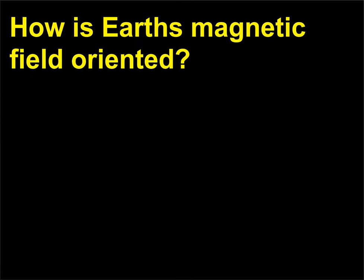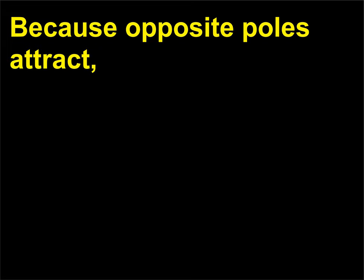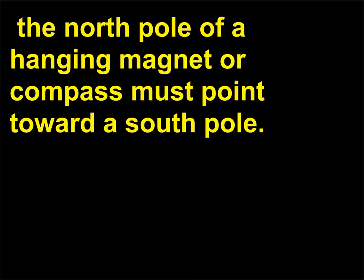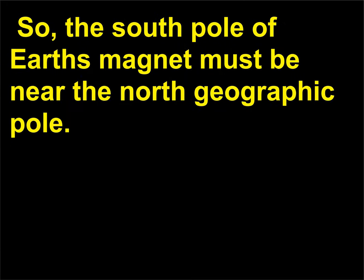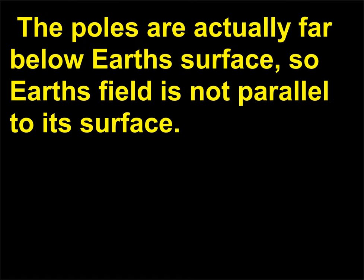How is Earth's magnetic field oriented? Because opposite poles attract, the north pole of a hanging magnet or compass must point toward a south pole. So the south pole of Earth's magnet must be near the north geographic pole. The poles are actually far below Earth's surface, so Earth's field is not parallel to its surface.